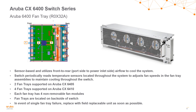For the fan trays, these sit into the back of the switch. The 6405 utilizes two fan trays, each with four fans built in, and the 6410 leverages four fan trays. The switch periodically reads temperatures from sensors located throughout the system and uses those readings to adjust the fan trays to optimize cooling. As you can see from the image, the 6405 has front-to-back airflow.